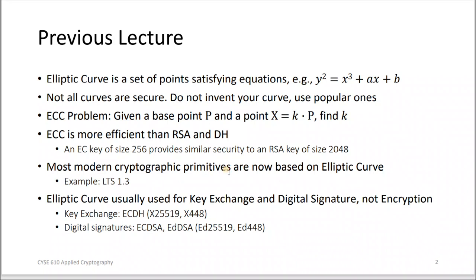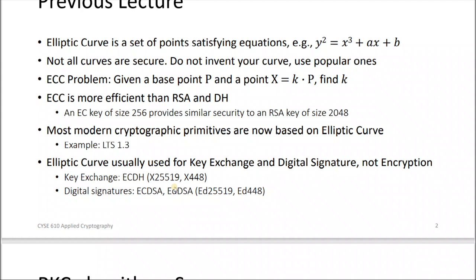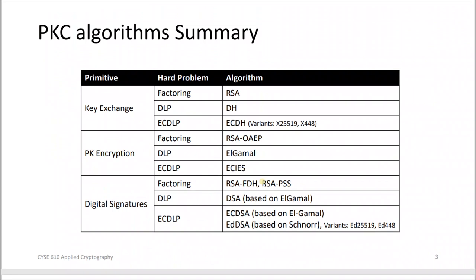One of the most modern examples based on elliptic curves is TLS 1.3. The elliptic curve is usually not used for encryption — it's not always better than RSA for encryption. For encryption we typically use symmetric key cryptography. The key exchange algorithm used is Elliptic Curve Diffie-Hellman, and for digital signatures we have ECDSA and EdDSA — EdDSA being short for Edwards-curve Digital Signature Algorithm. When using the 448 curve, we call it Ed448.